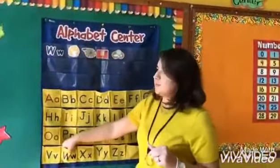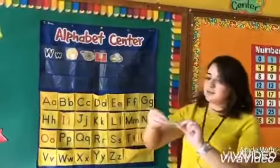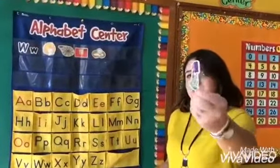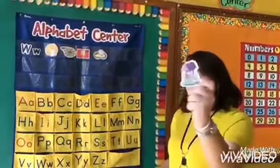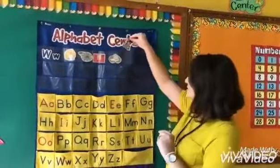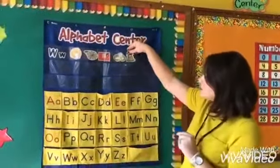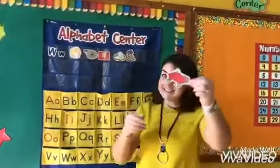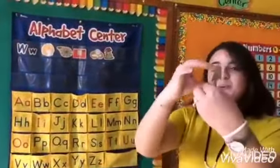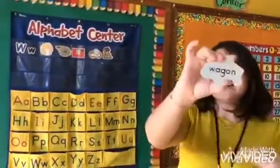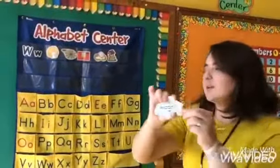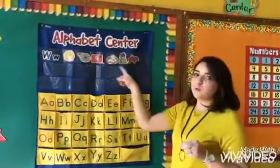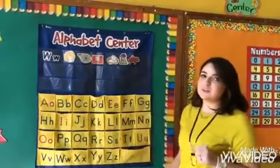What else can we find? Any more words? Can you guess what this is? It's a well. A well starts with the letter W. And I think our last word for today is a wagon. Wagon. And these are our words that begin with the letter W.